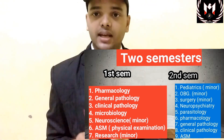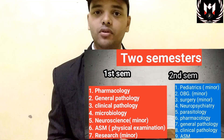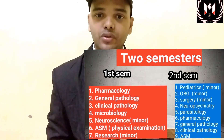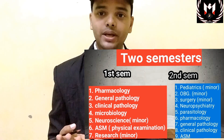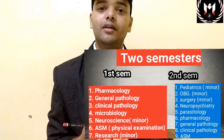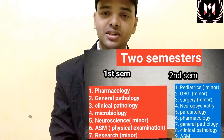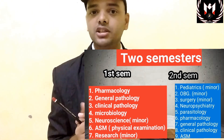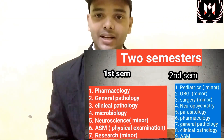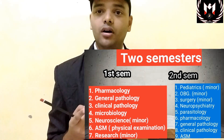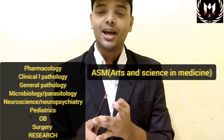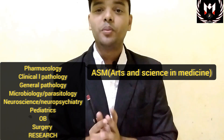In the second semester, apart from pharmacology, pathology, clinical pathology, and microbiology, we have some extra minors like OB-GYN, pediatrics, and surgery. We also have neuropsychiatry — instead of neuroscience in first semester, we have neuropsychiatry in second semester. And instead of microbiology in first semester, we have parasitology in second semester. So the subjects in second semester are: pharmacology, clinical pathology, general pathology, parasitology, pediatrics, OB-GYN, surgery, and neuropsychiatry.